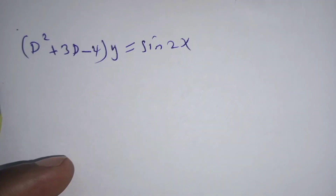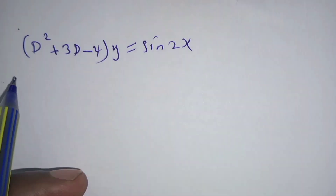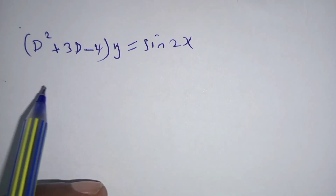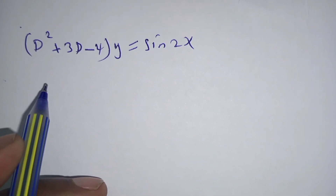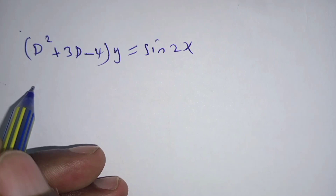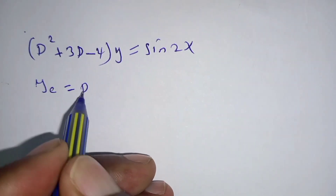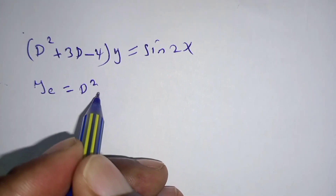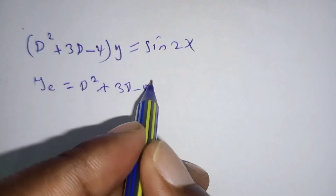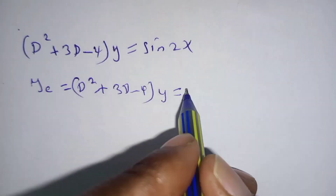Hello everyone, welcome to the standard second order linear difference equation. We are considering the non-linear part. This equation has two parts: the complementary part, which is reduced to D squared plus 3D minus 4 times y equals zero.